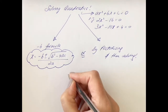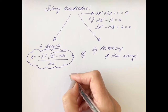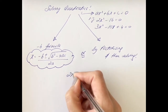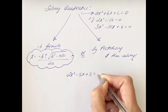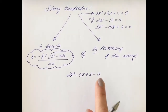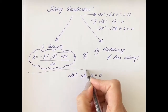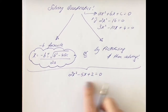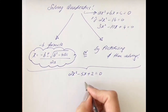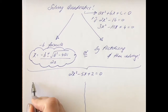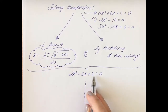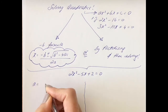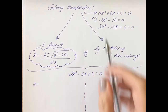The first quadratic we're going to look at is 2x squared minus 5x plus 2 equals 0. We're going to solve it both ways. So the first thing we're going to do is use the minus b formula. When you're using the minus b formula, the best thing is to first identify what is your a, your b, and your c. The first step is to multiply the first number by the last number, and I get 4.